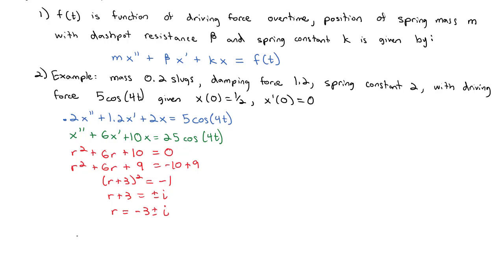Which means now we have the complementary solution, x_c = e^(-3t) times (c₁cos(t) + c₂sin(t)).